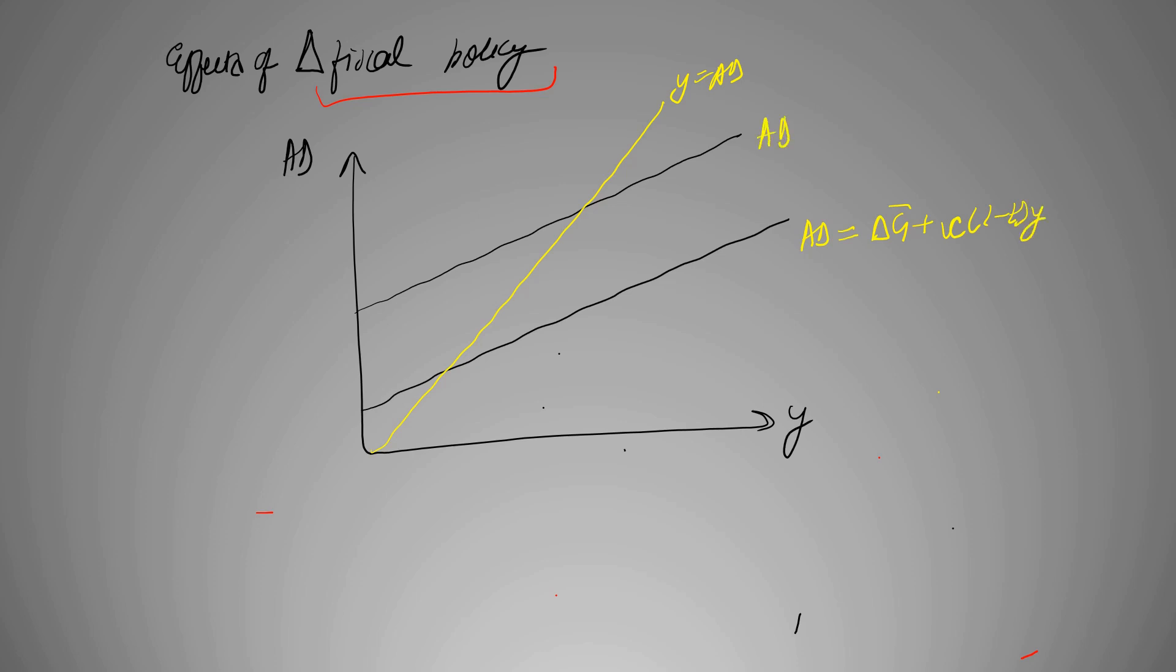And this is AD dash, when your government spending has changed and everything remaining the same. So we say that this change is your change in government spending. Now, earlier intersection point was this, making it y naught, now it's y dash. It's AD and this is a new AD naught.